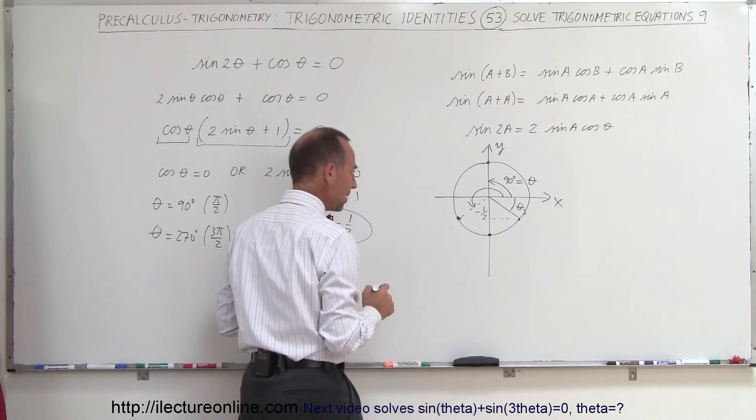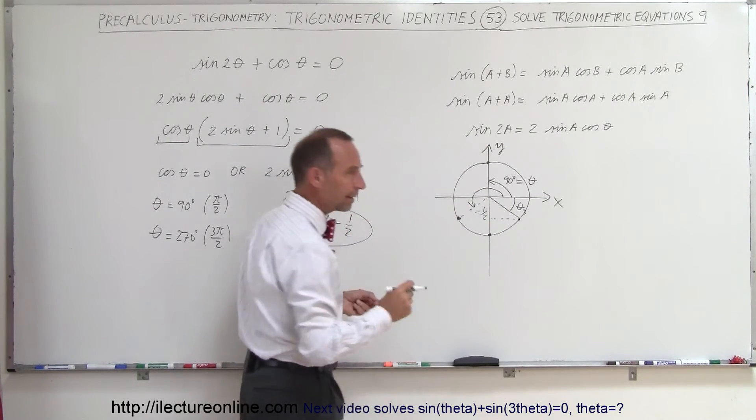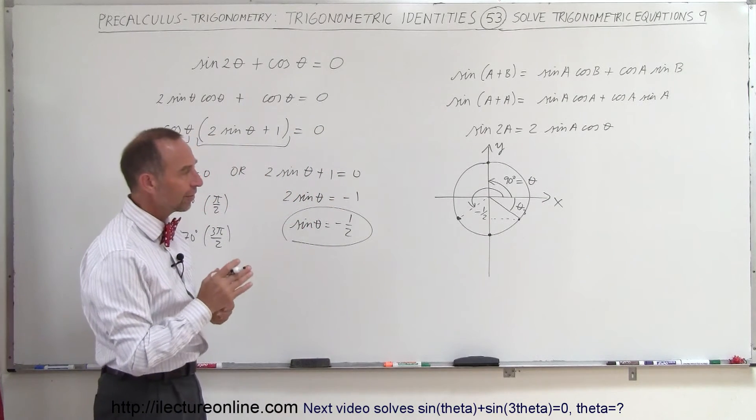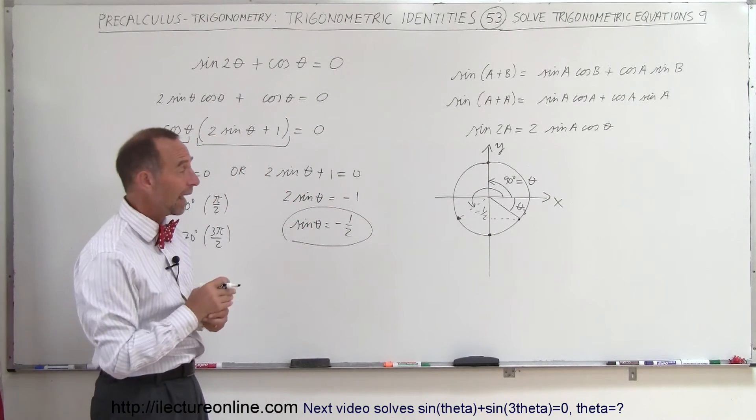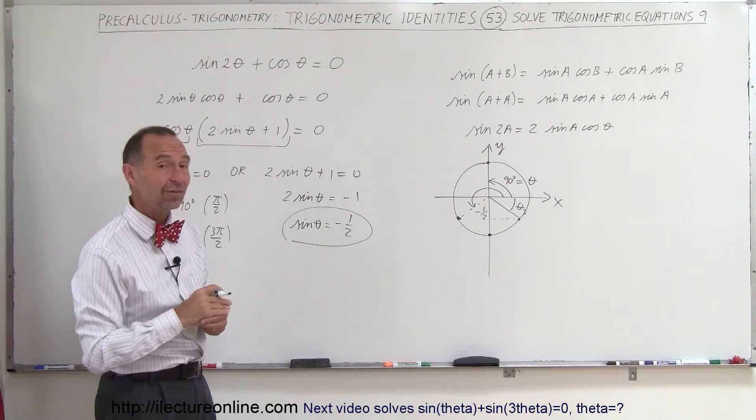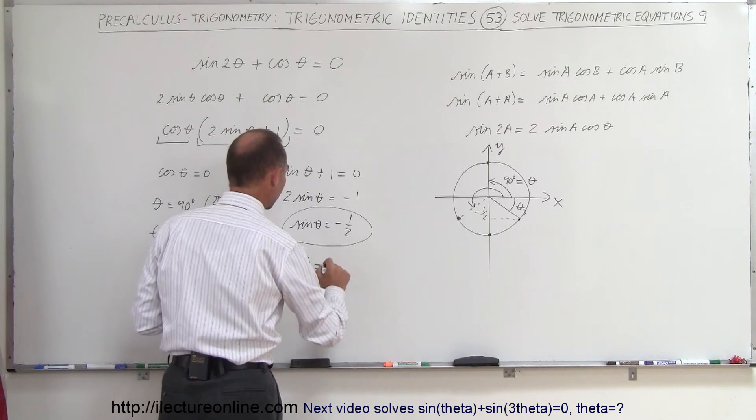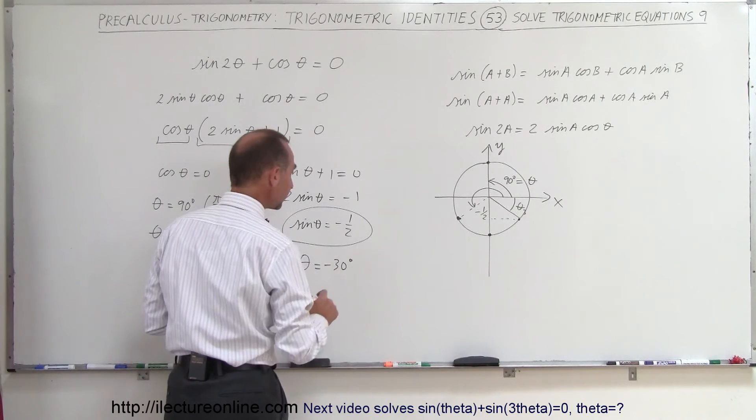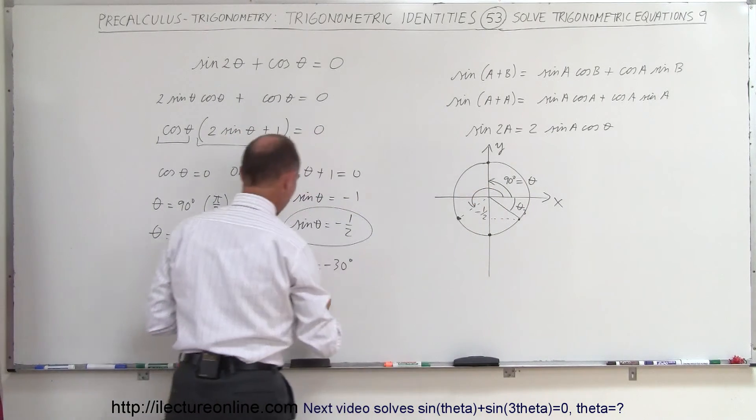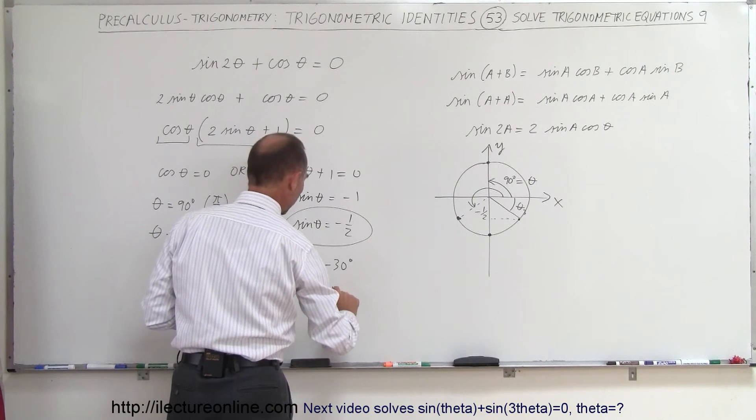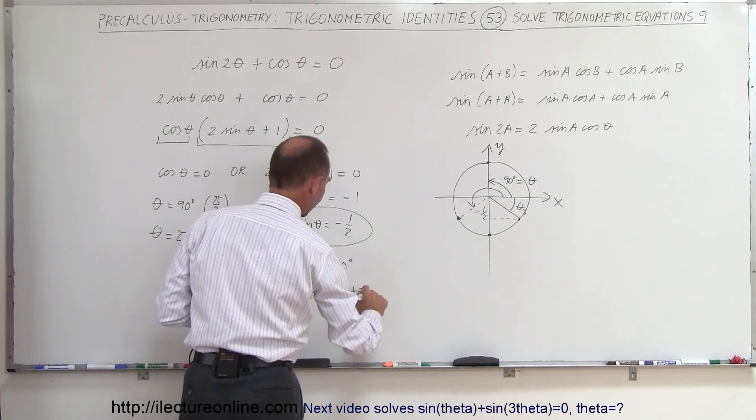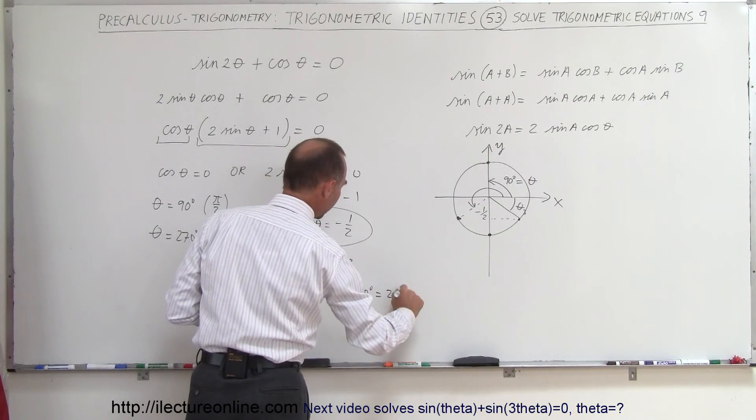And so theta sub 3, let's see, when theta is 30 degrees, the sine of theta is 1 half. When theta is negative 30 degrees, the sine of theta is negative 1 half. So one of the options is theta equals negative 30 degrees, or 180 plus 30, so theta is equal to 180 degrees plus 30 degrees, which is 210 degrees.